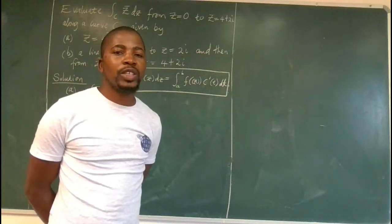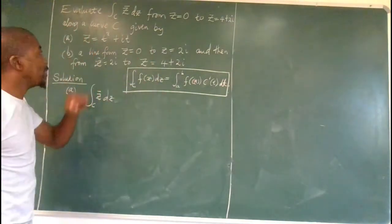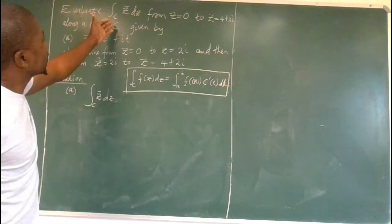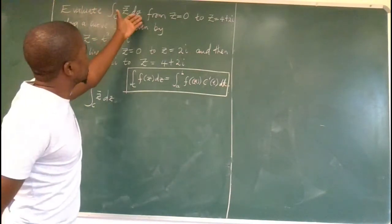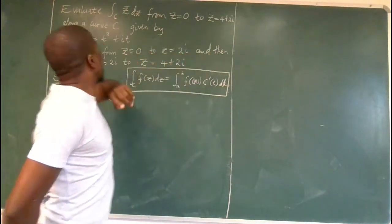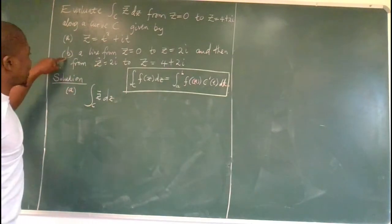Okay, welcome again to yet another session where we want to tackle this question here. So we are asked to evaluate this integral for this complex conjugate from this point, which is the origin to 4 plus 2i along a curve given by this for part A and part B.